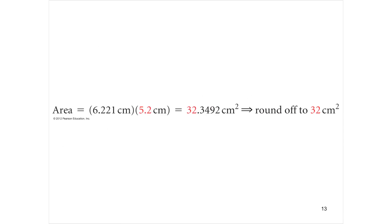Here's another example. I have four significant figures here, and two significant figures here. Your calculator gives you a long answer. I have to round to two significant figures. So I go to the first two digits — that's 32. I look at the next digit: if it's more than five, the 2 goes up to 3; if it's less than five, the 2 stays put. Your answer would be 32.